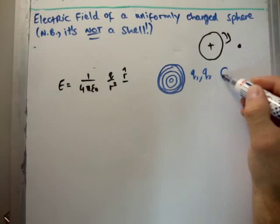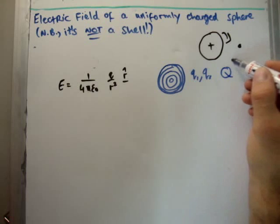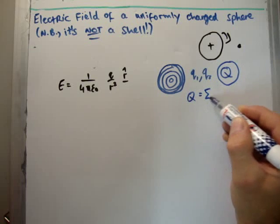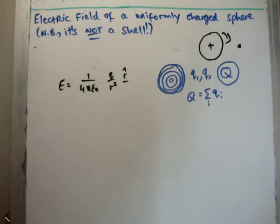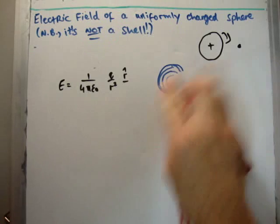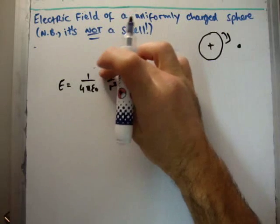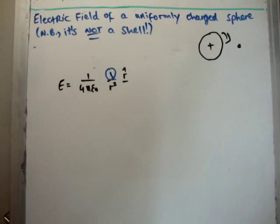So the total amount of charge that's in the solid sphere is just the sum of the charges in each of these shells. So it's capital Q, where capital Q is equal to the sum of the infinitesimal charges. For that reason, we can say that our solid sphere has the same electric field as our uniformly charged shell. We can say that the small Q is equal to the total charge.